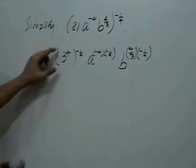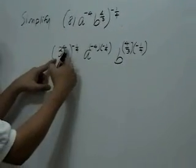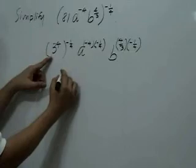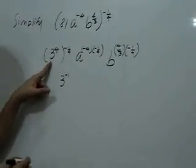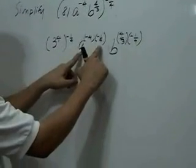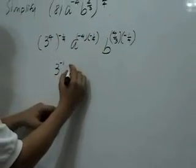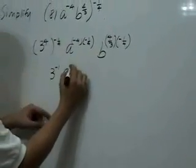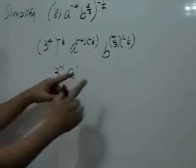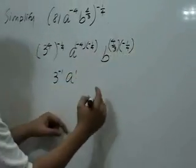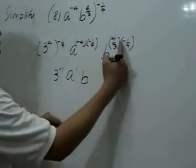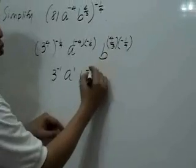So we have, for 3 to the 4th raised to the negative 1 fourth, 3 to the negative 1. For a raised to this exponent, we have a to the positive 1. And for b raised to this exponent, we have b to the negative 1 third.